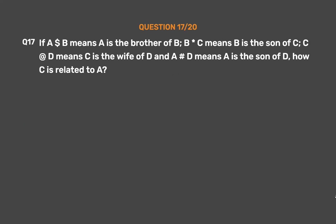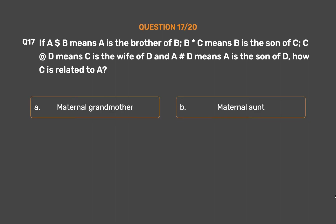Question number 17. If A $ B means A is the brother of B, B * C means B is the son of C, C + D means C is the wife of D, and A # D means A is the son of D. How is C related to A? Option A: Maternal Grandmother. Option B: Maternal Aunt. Option C: Aunt. Option D: Mother.